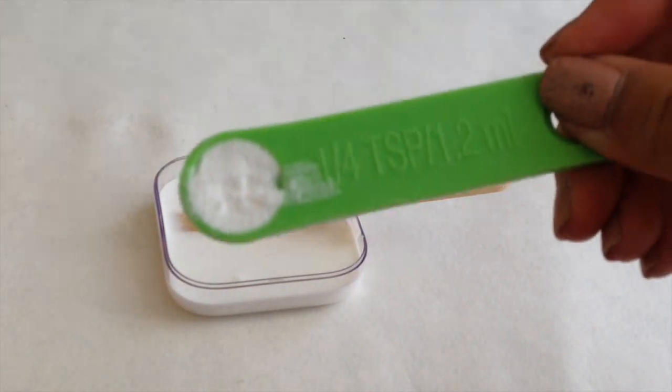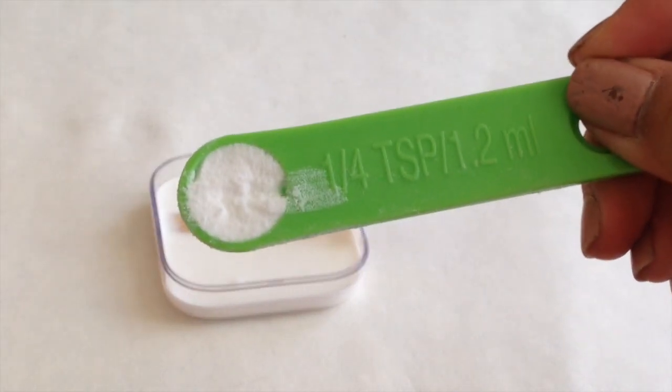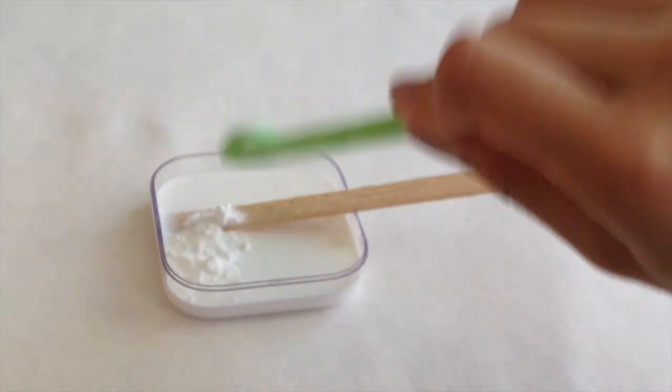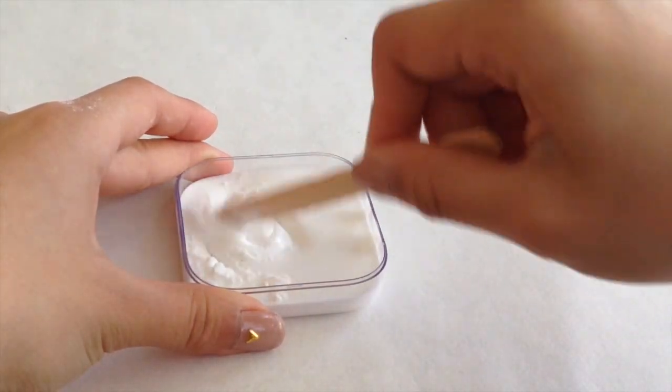Now we are going to add in some baking soda, again you don't have to be exact, I just added a fourth of a teaspoon. And now just incorporate that into the glue.